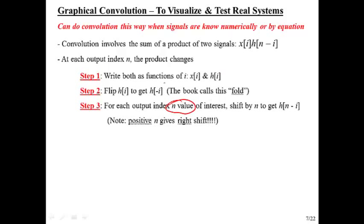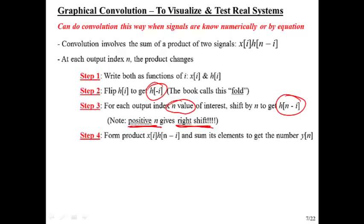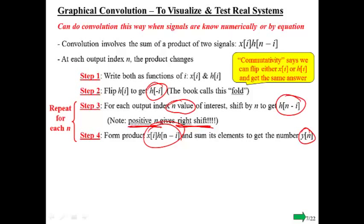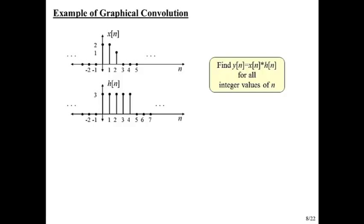Step number three says for each output index n value that we're interested in, we would shift this flipped version by n. And now because we flip things, a positive n gives a right shift. Then we form this product, and we add up the elements of that product, and that gives us the number y of n. Now, commutativity says that instead of flipping h so that we get h of n minus i, we could just as easily flip x and leave h unflipped. So which one we do is going to depend upon which one it's easier for us to do.